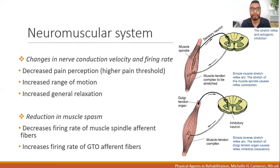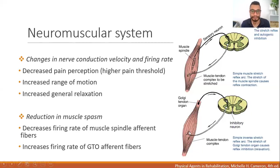As a response to decreased muscle spindle firing and increased GTO firing, the alpha motor neuron will have a decreased firing rate, causing muscle relaxation. This is what happens when we apply heat to the muscle — these changes in nerve conduction velocity and firing rates allow us to reduce muscle spasm.